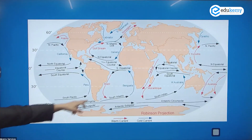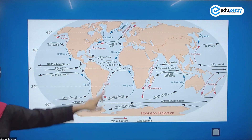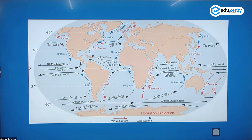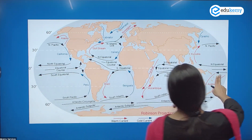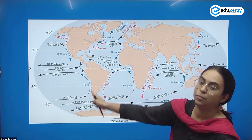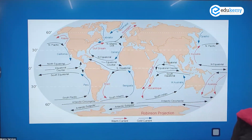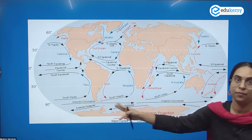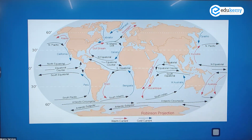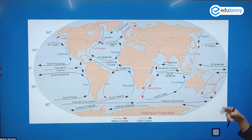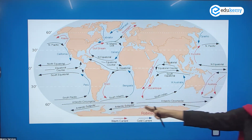The South Equatorial Current is a warm current, the Brazilian Current is a warm current, and the Benguela Current is the cold current. Similarly, the South Equatorial Current is warm, the East Australian Current is a warm current, but turning back it becomes the cold Peru Current. And in the southern region, the westerlies drive one current that circumscribes the entire earth — that is your Antarctic Circumpolar Current.